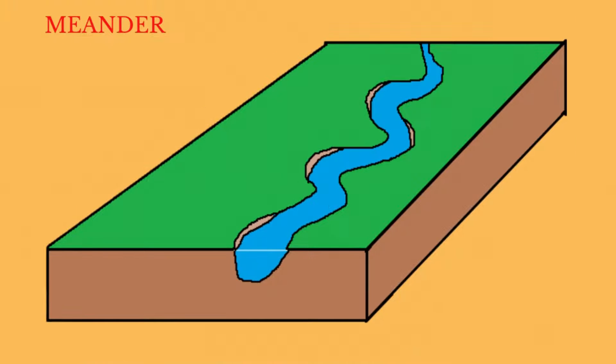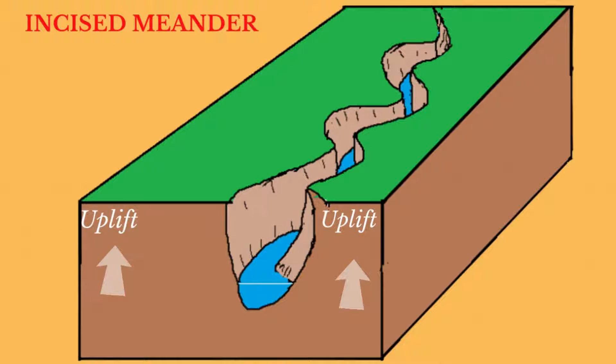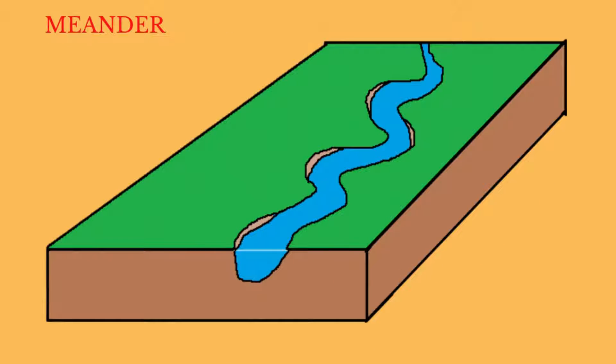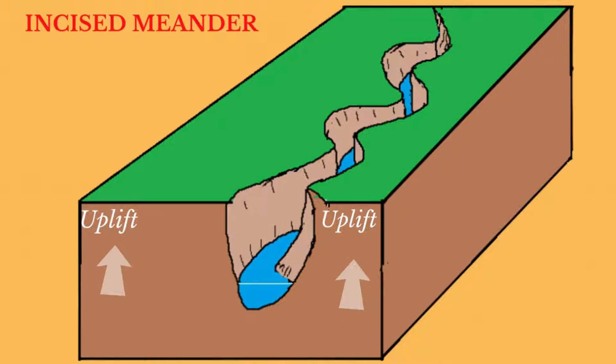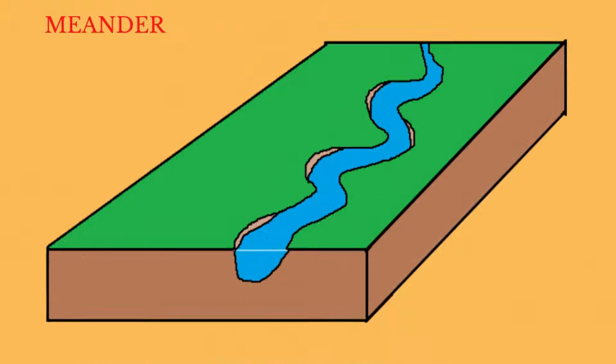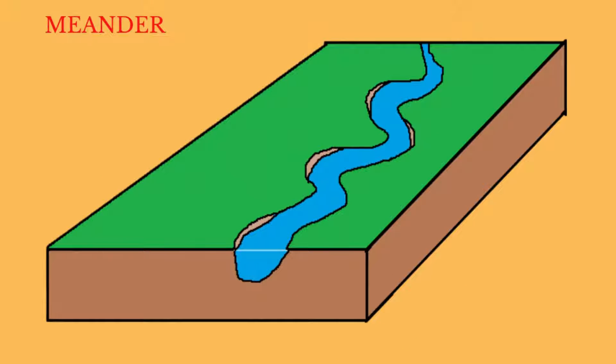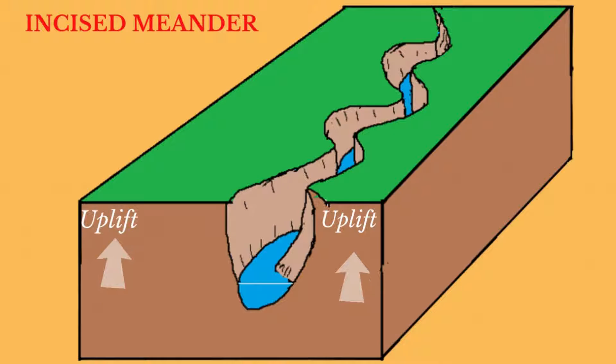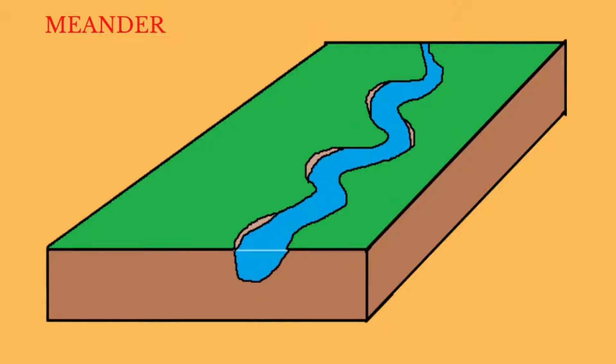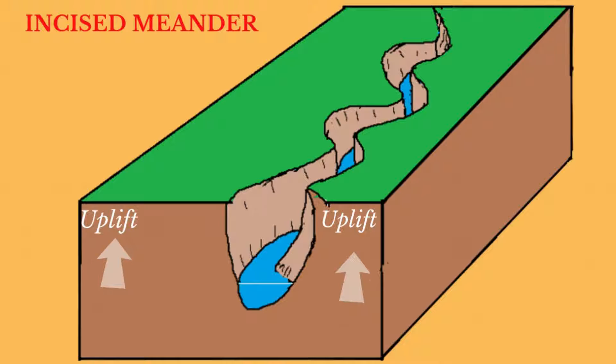When rejuvenation occurs, vertical erosion begins to dominate the lateral erosion that usually occurs in the meander. This results in a steep-sided meander cut into the floodplain called an incised meander.